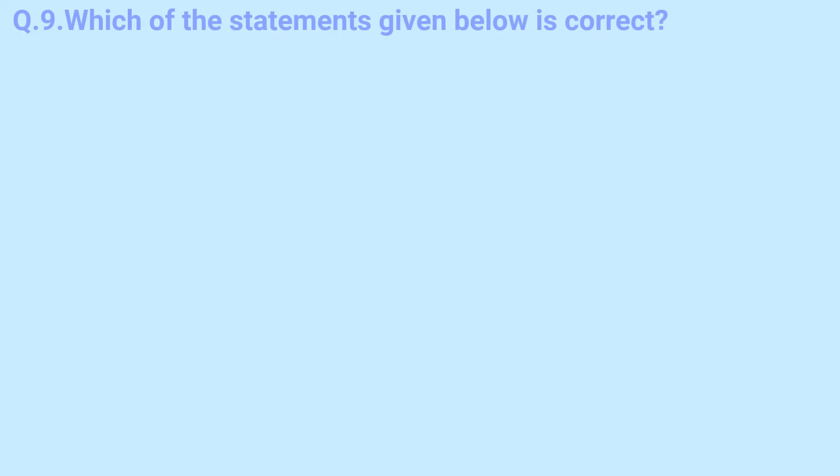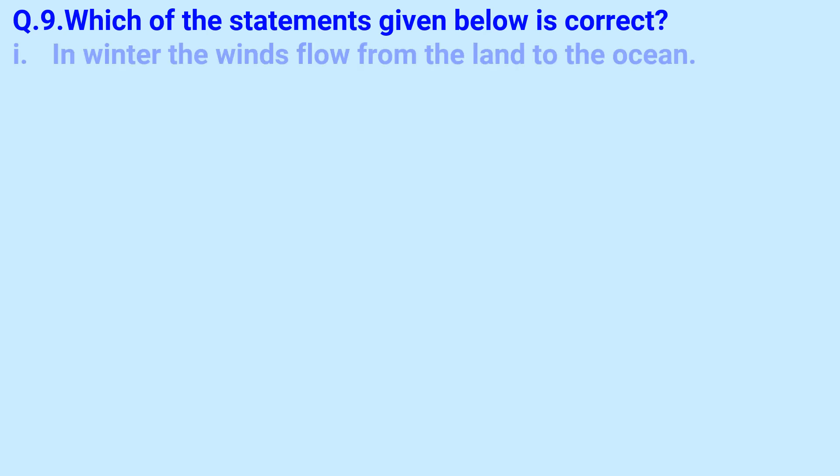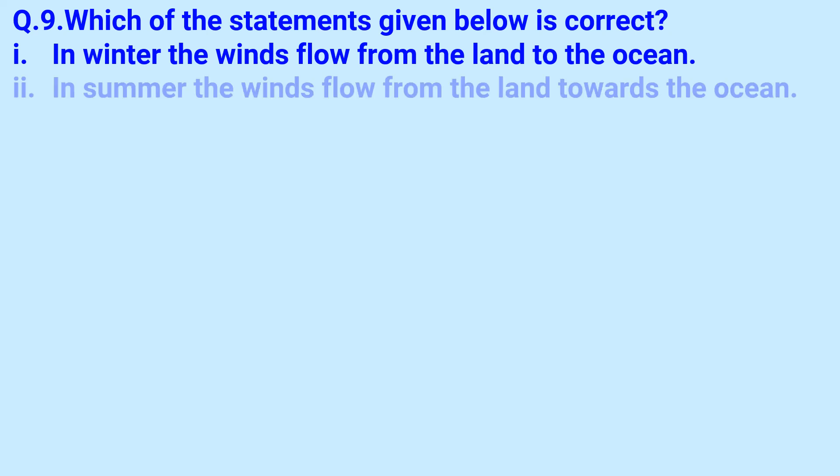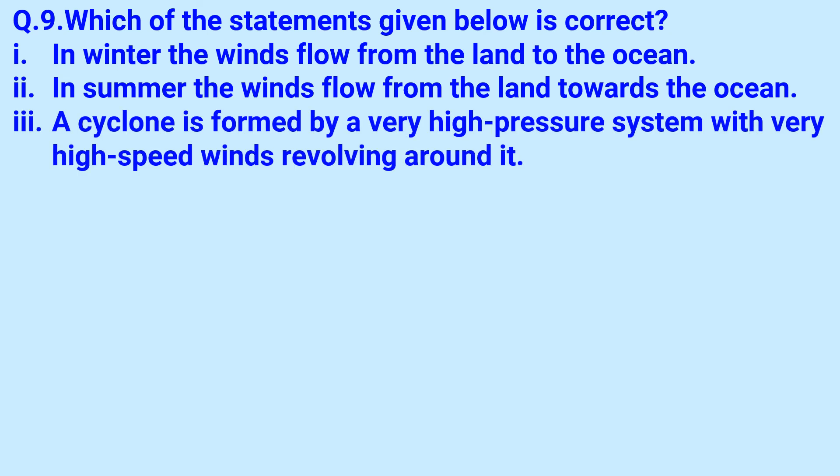Which of the statements given below is correct? A cyclone is formed by a very high-pressure system with very high-speed winds revolving around it.